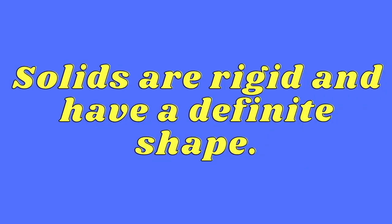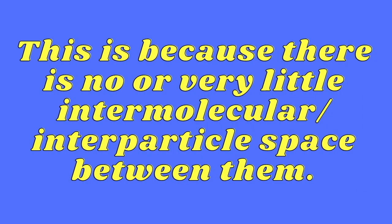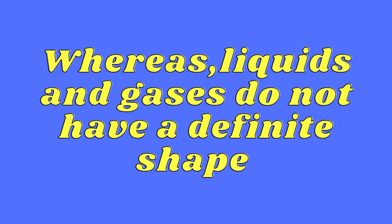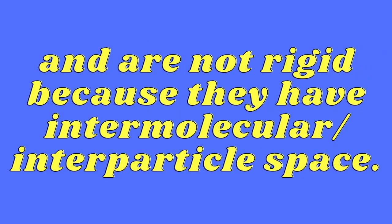From this experiment we conclude that solids have a definite shape — they are rigid but have the least intermolecular or interparticle space. Liquids and gases have no definite shape, they are not rigid, but they have more intermolecular or interparticle space. So we have seen that solids have their own shape while liquids and gases do not.